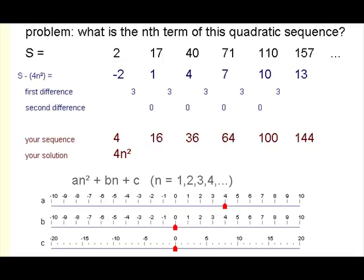And look what happens now. What we've done is we've taken 4n², which is this sequence, and we've taken it away from the original sequence. So in a sense we've taken the an² away from this, and what we're left with is bn + c.